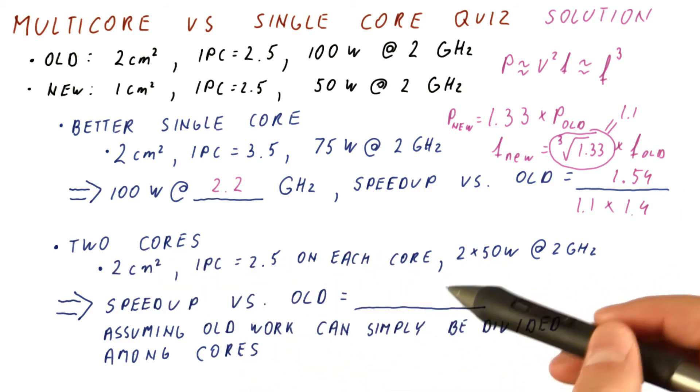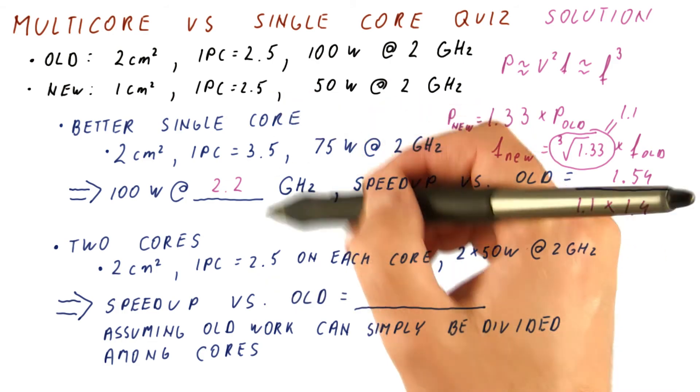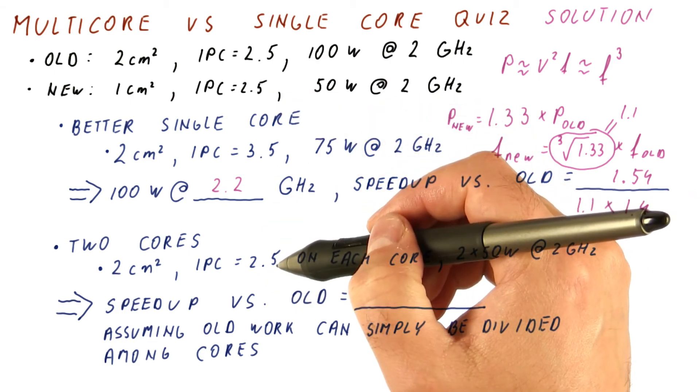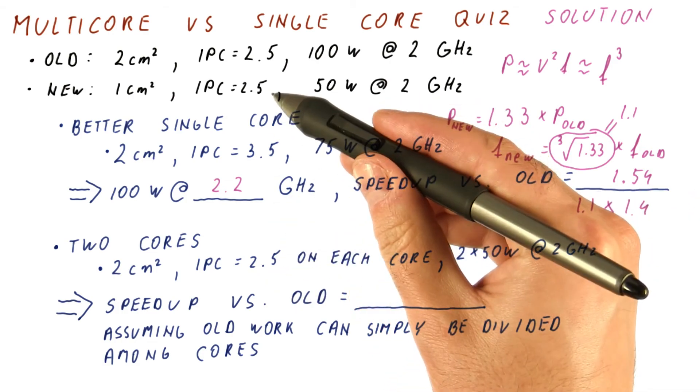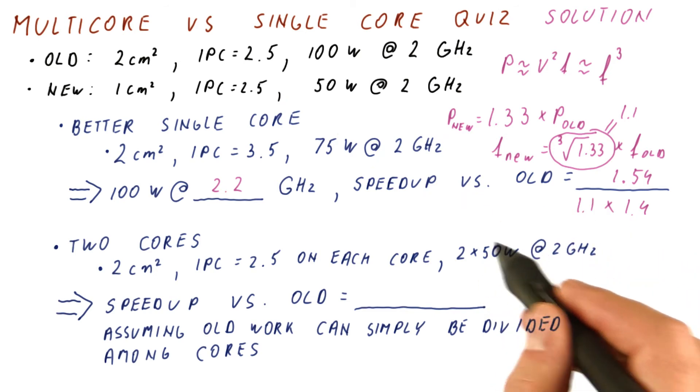Now let us look at the two core option. We have the same IPC as before, but we now have two cores that are doing that. So we are executing twice as many instructions as before, at the same frequency, and at the same power.